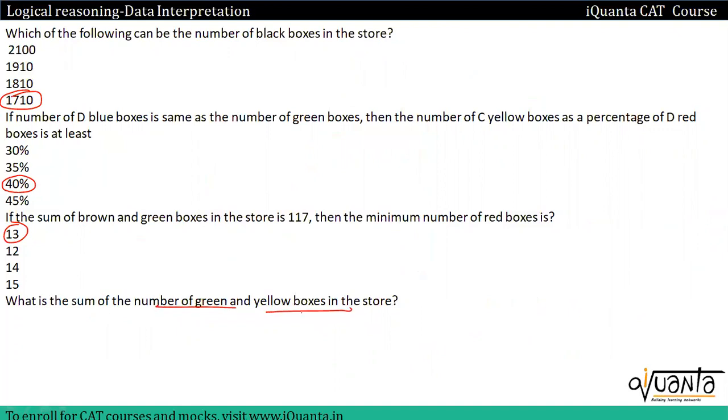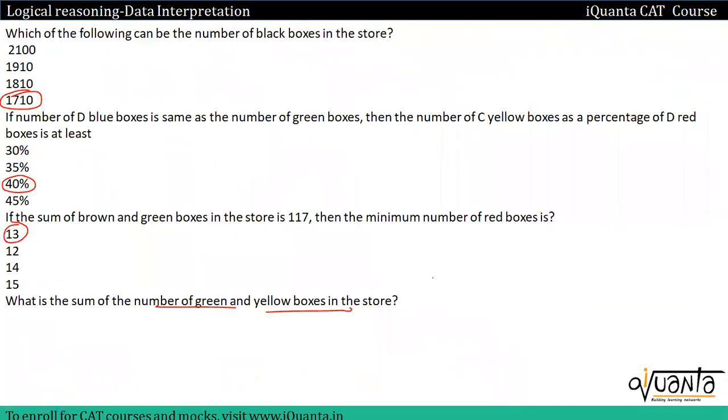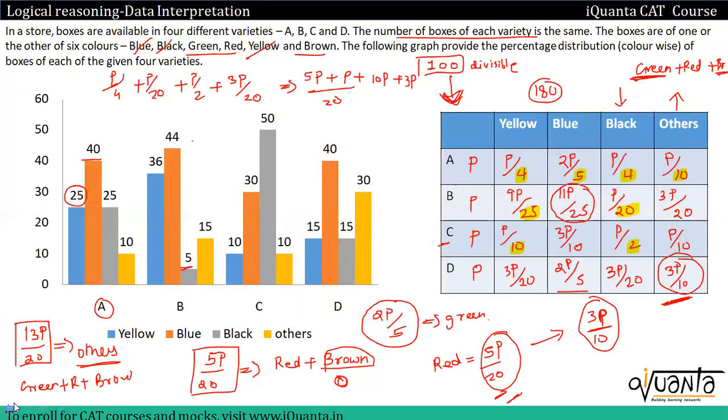What is the sum of the number of green and yellow boxes in the store? You see, we don't know the exact value of green and yellow because all our values are in percentage terms. So we don't need to check this, directly our answer will be cannot be determined. So guys, our set is complete here. You can see in what way we can solve this type of set. This is a very good set. In DI, there are chances of getting this type of sets, so you need to keep in mind the approach for solving this type of set. Thank you guys and happy learning.